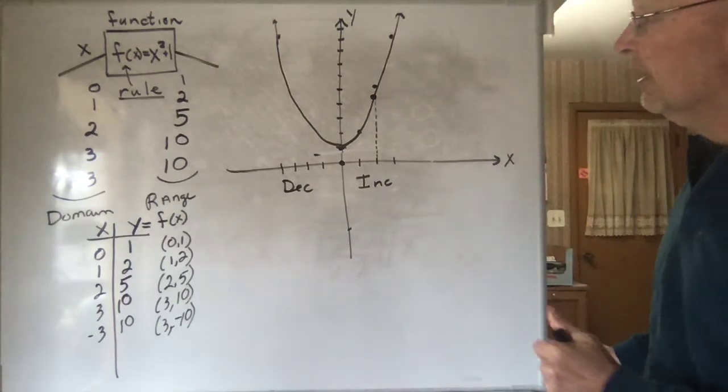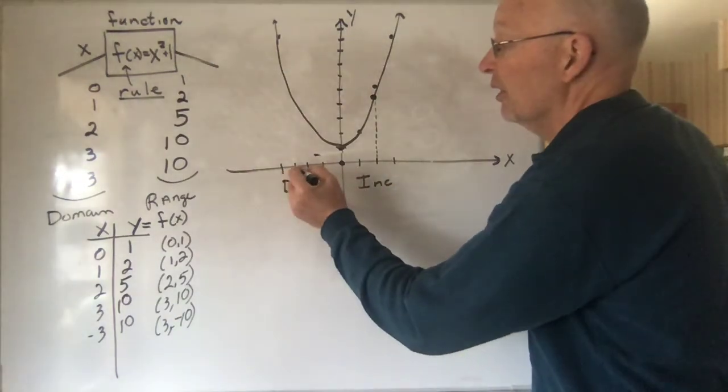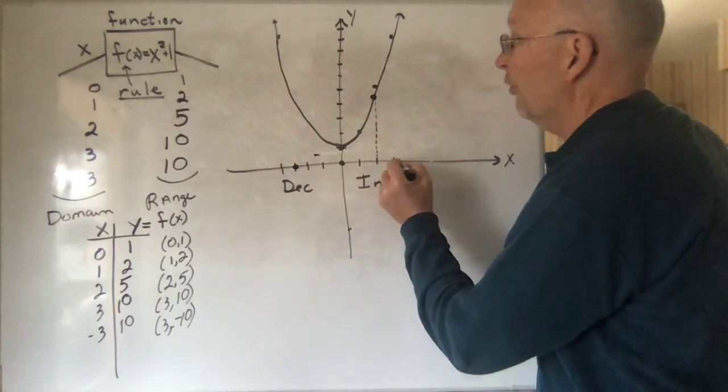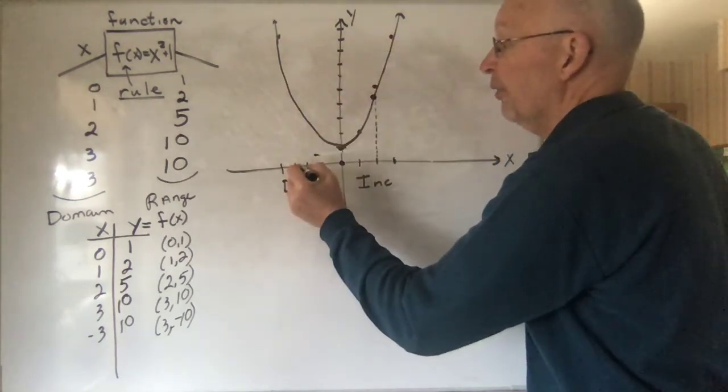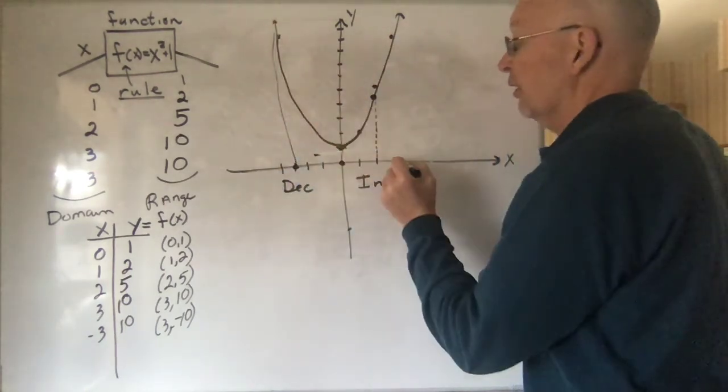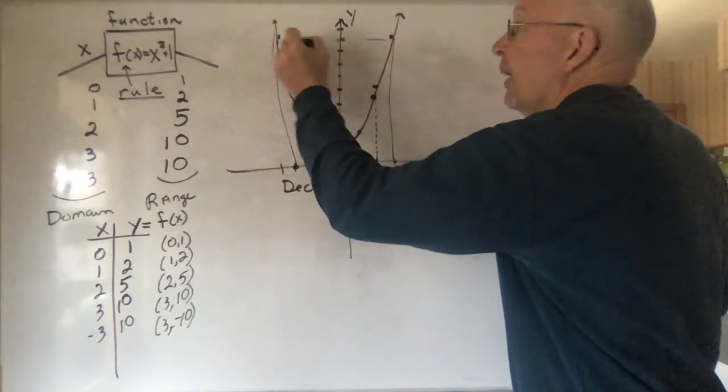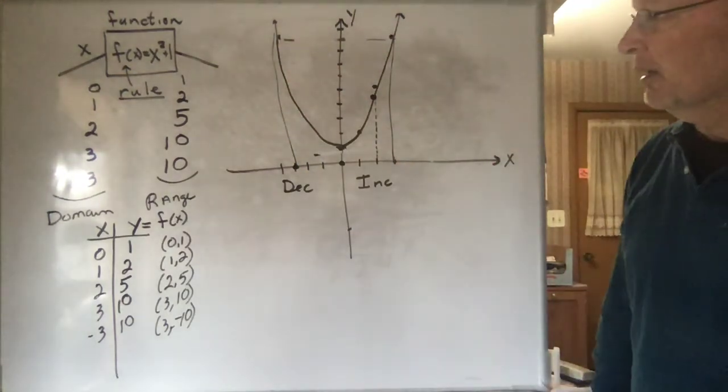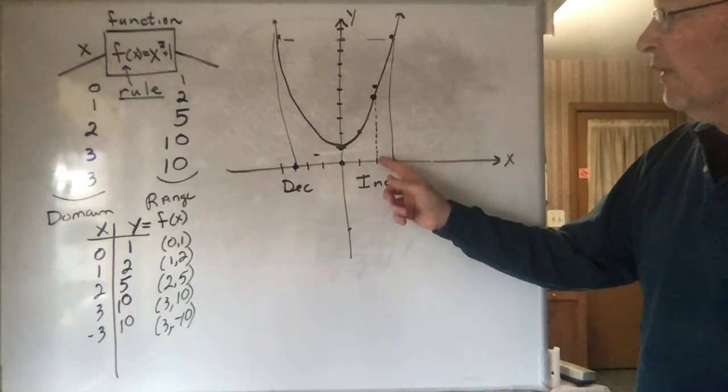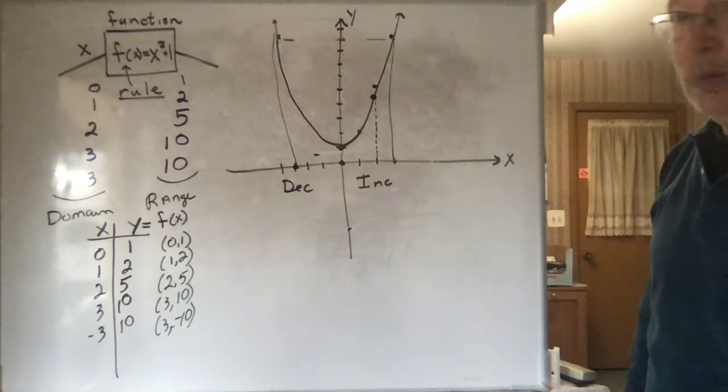Notice that it is possible to have two different x values, both go to the same y value. Both 3 and negative 3 go to 10, so there's no problem with that. But, as I say, for every value of x, you can only have one value of y.